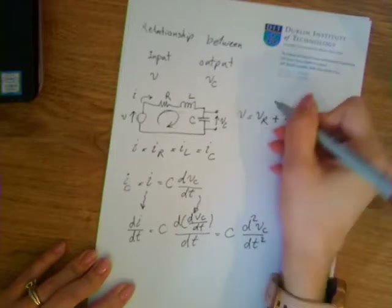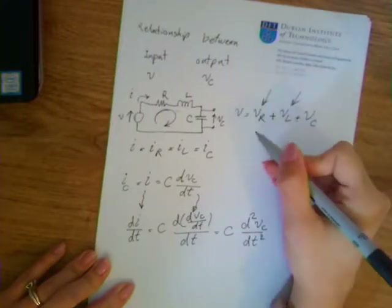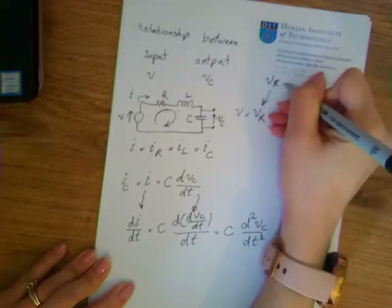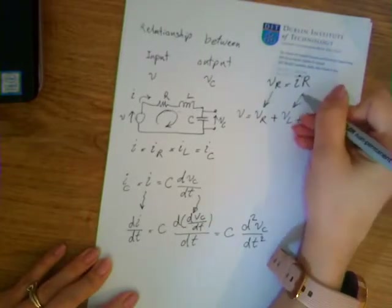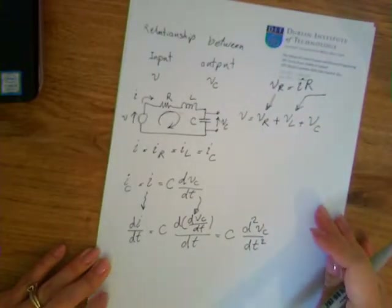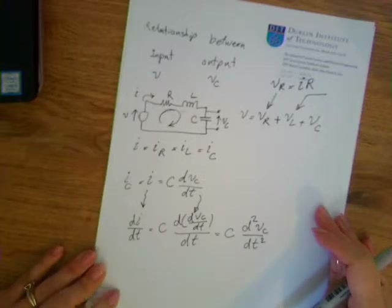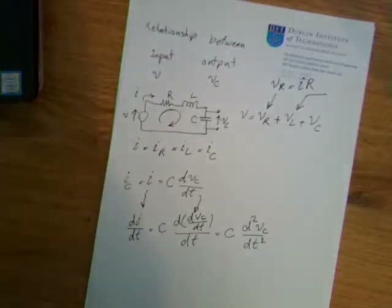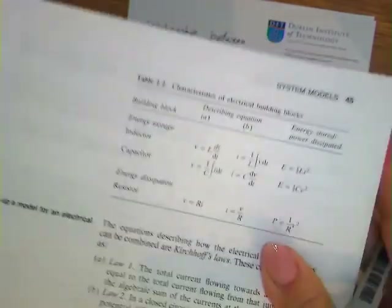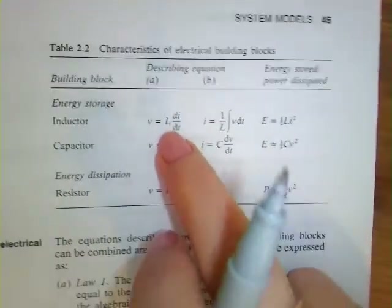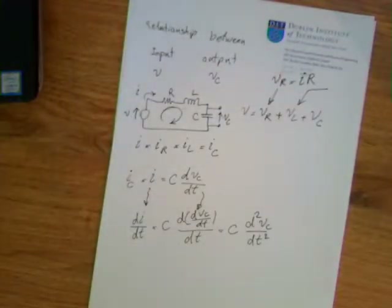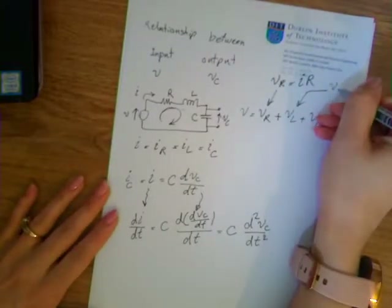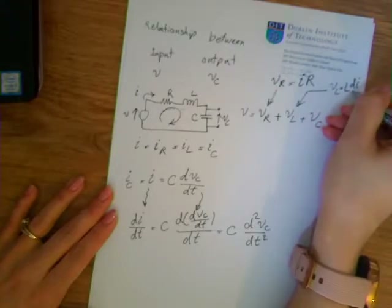To do that, I am going to replace VR and VL. For VR, I know that VR equals the current I multiplied by the resistance R. For VL, referring to the table, the voltage across the inductor is VL equals L times the derivative of the current over time, dI/dt. So VL equals L times dI/dt, which is useful for the substitution.